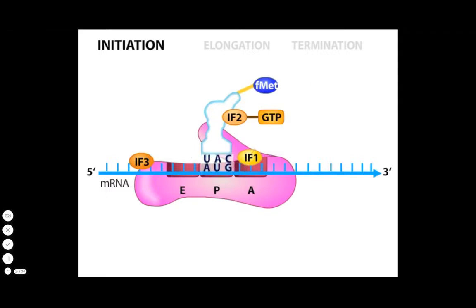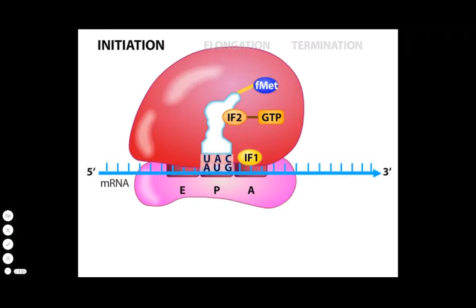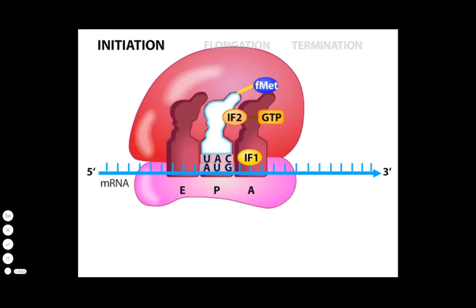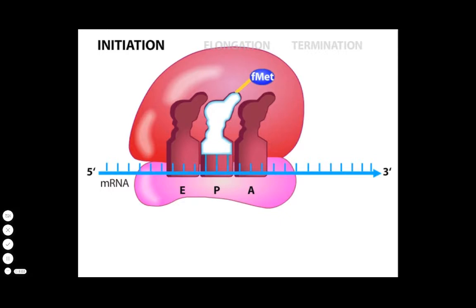Once the initiator tRNA is in place, IF3 is released. With the loss of IF3, the 50S subunit can dock on the 30S subunit. The docking of the 50S subunit triggers the hydrolysis of GTP on IF2 and the subsequent release of the initiation factors. The ribosome is now ready for elongation.